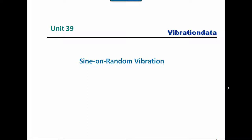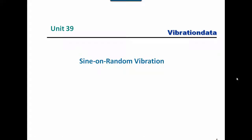Our topic for today is sine-on-random vibration. This is a very interesting topic. One scenario where it occurs is helicopter vibration — a helicopter has a main rotor and a tail rotor, each with a certain number of blades, which sets up sinusoidal oscillations at the blade passing frequencies, along with broadband random vibration in the background.